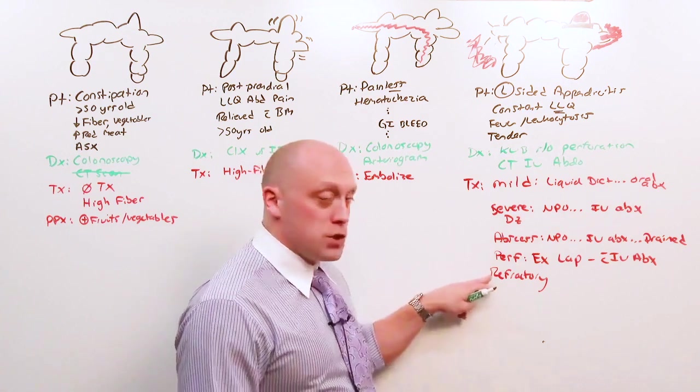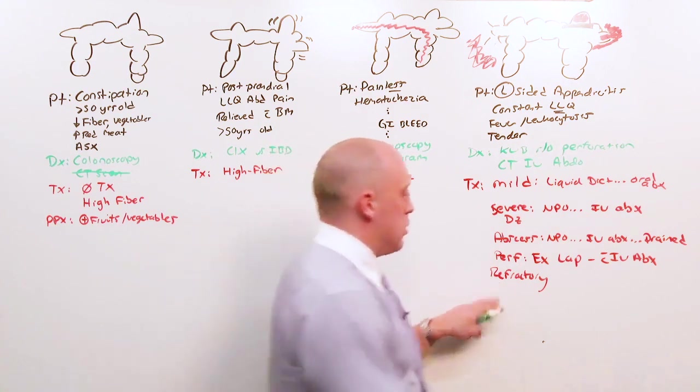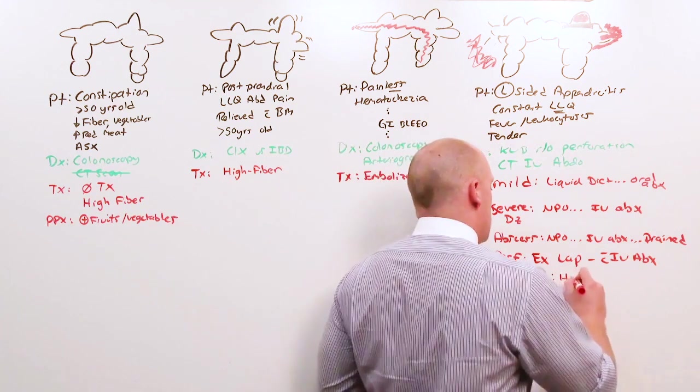You're going to treat the acute diverticulitis just as if it were new because it's a new inflammation: mild, severe, abscess, perf. But once you're done with treatment, after two or more times that this happens, you really want to think about doing a hemicolectomy.